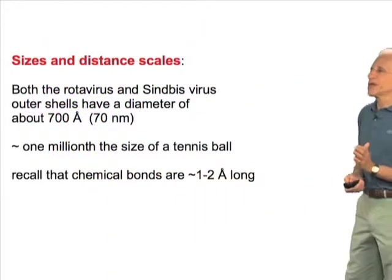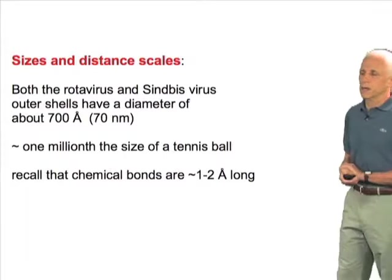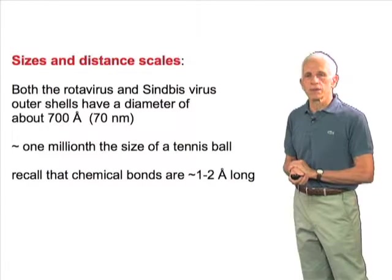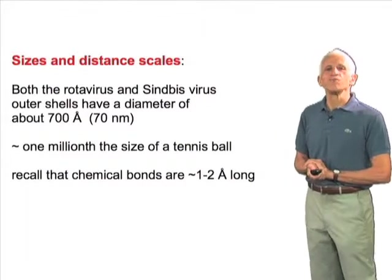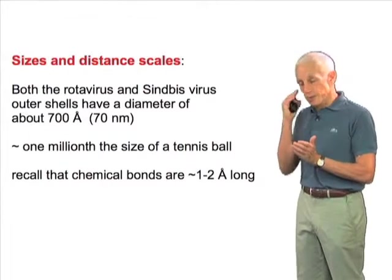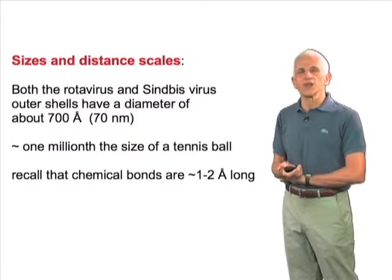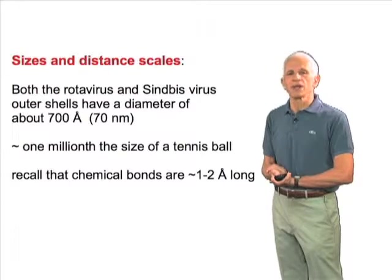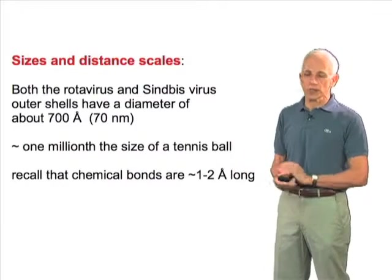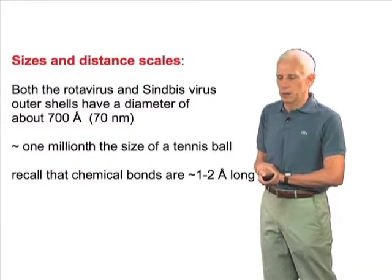Just to remind you of sizes and distances, both the rotavirus particle and the synbusvirus particle have outer shells that are about 700 angstroms in diameter, or 70 nanometers — that's about a millionth the size of a tennis ball. Recall that chemical bonds are between 1 and 2 angstroms in length, and that's why chemists use angstroms rather than nanometers; it's the natural unit of a chemical bond. So when I say 700 angstroms, you can think of that as 500 to 700 atoms across. Of course, it's a volume, and the molecular mass of these particles is some tens of millions of Daltons.